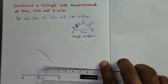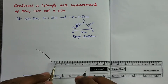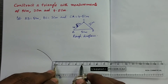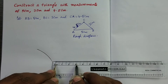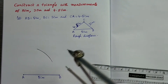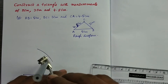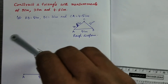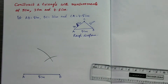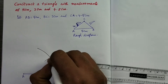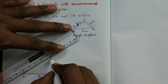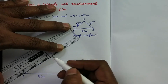Next, BC is equal to 3 cm. Take the compass again and set it to 3 cm — keep the compass point on 0 and the pencil point on 3. Take B as center with 3 cm as radius and draw an arc. This arc intersects the previous arc at C, so this vertex is C.